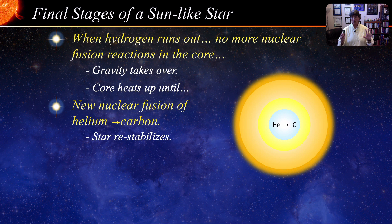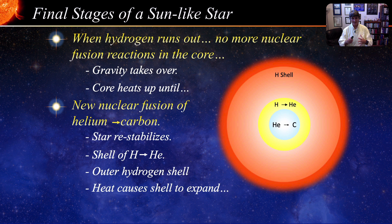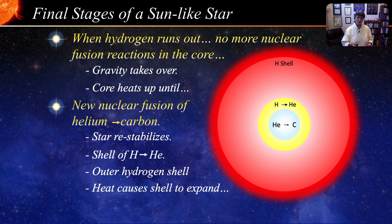Here we see the star's core fusing helium into carbon, surrounded by a shell of hydrogen fusing into helium, and then the outer shell of hydrogen. The heat from the core and the fusing hydrogen shell push the cooler hydrogen shell outward, greatly expanding the size of the star. As gas expands it cools and shifts toward the red — so our expanded star becomes what is known as a red giant.